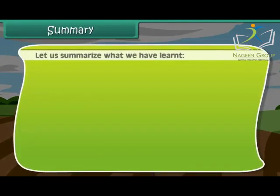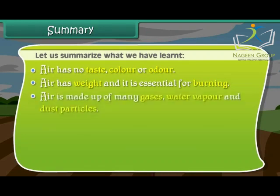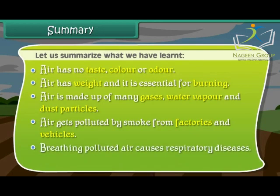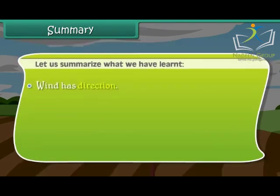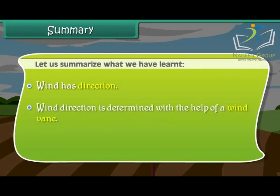Summary: Air has no taste, color, or odor. Air has weight and is essential for burning. Air is made up of many gases, water vapor, and dust particles. Air gets polluted by smoke from factories and vehicles, and breathing polluted air causes respiratory diseases. Moving air is known as wind, and wind direction is determined with the help of a wind vane.